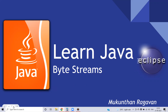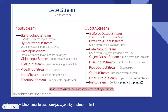In Java, at a high level we will be having two byte stream classes: one for input stream and one for output stream. Both of these classes are abstract classes, so you cannot create objects for them. However, we can have different implementations, and based on our scenario we can choose the appropriate implementation.